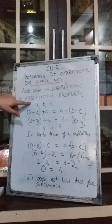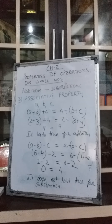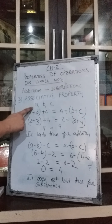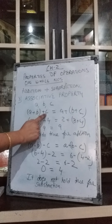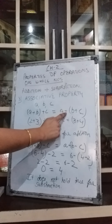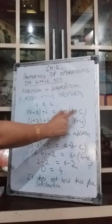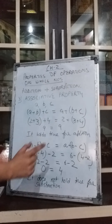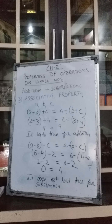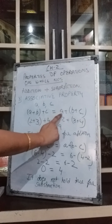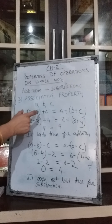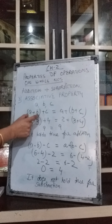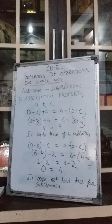Now we come to the third property, which is associative property. Associative property means that if there are three whole numbers A, B, C, then (A plus B) plus C is equal to A plus (B plus C). We have just changed the position of the brackets. In commutative property we changed the position of the numbers; in associative property we change the position of the brackets.